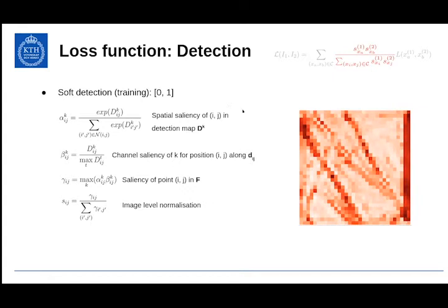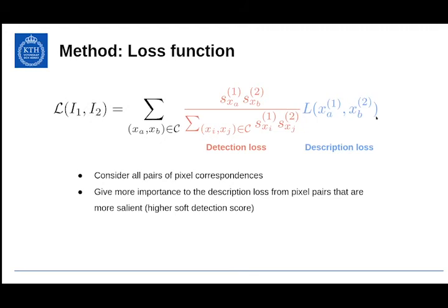With those two parts clarified, let's look at the overall loss function. In general, we consider all pairs of pixel correspondences found in the image pairs we feed in. We care about the description loss for all of them, but give higher importance to description losses from pixel pairs that are more salient — those with higher detection scores.